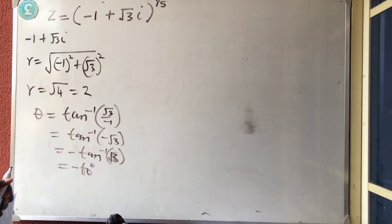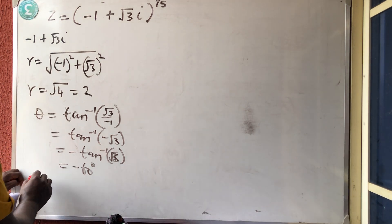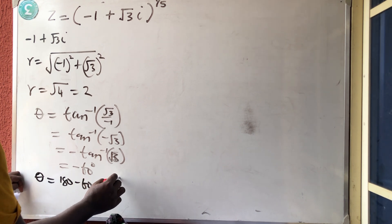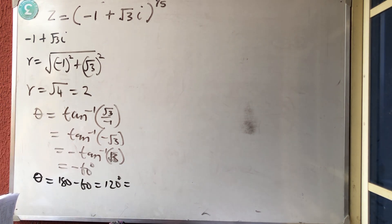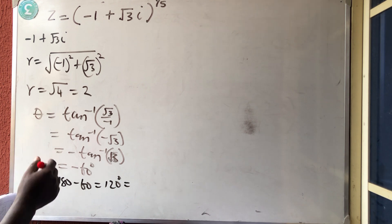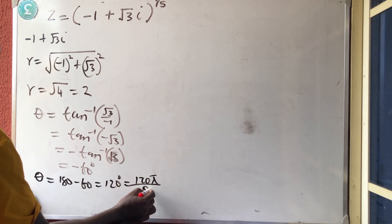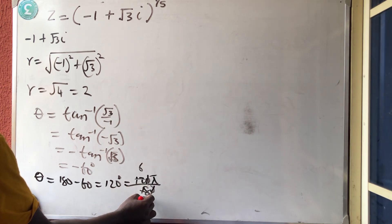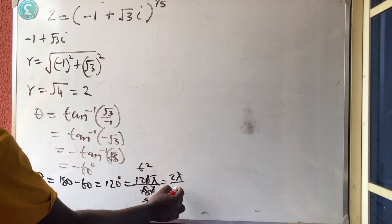That gives minus 60 degrees. But minus 60 degrees is not in the second quadrant, so I say 180 minus this. My theta normally will be 180 minus 60, which is 120 degrees. Let me change it in terms of pi because of that formula. So 120 pi over 180 — pi is 180, they can cancel out — giving 2 pi over 3.